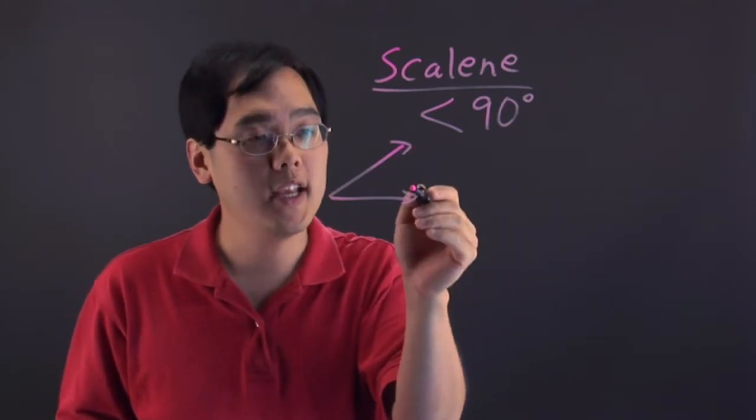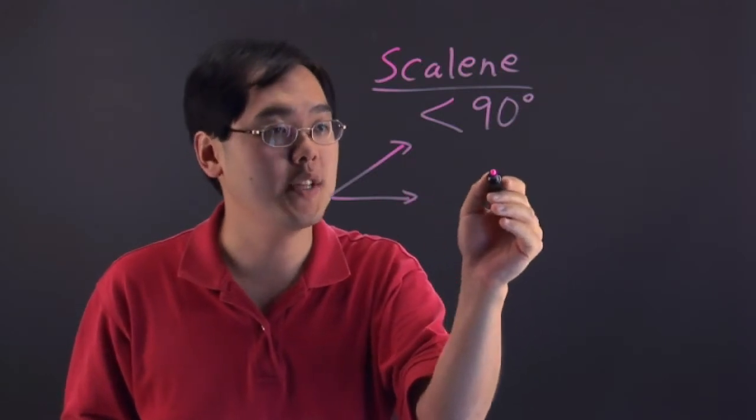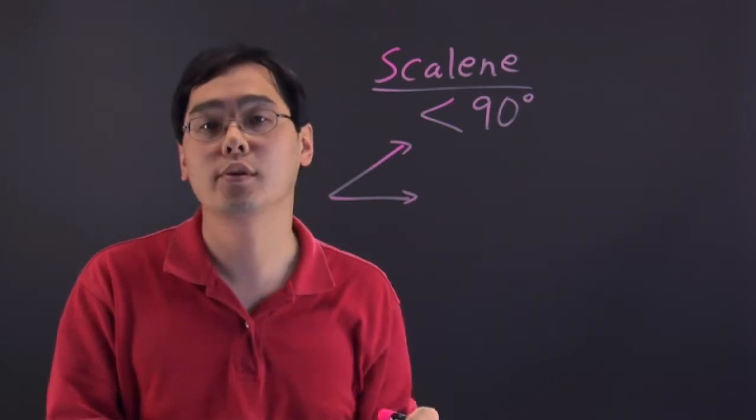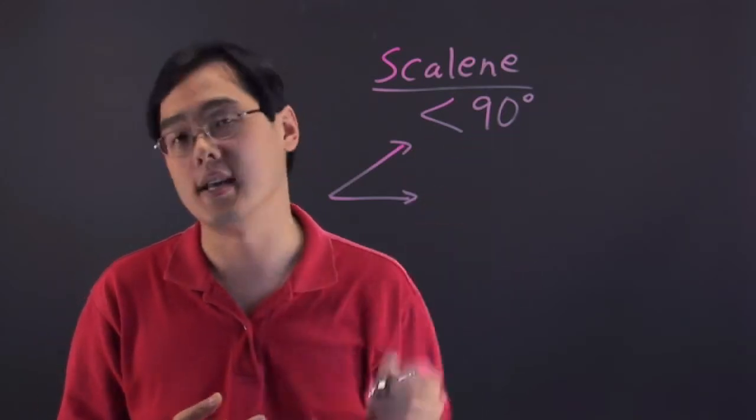So you have a scalene angle here that's less than 90 degrees, and oftentimes in a scalene triangle, all the angles in that triangle are going to be less than 90 degrees.